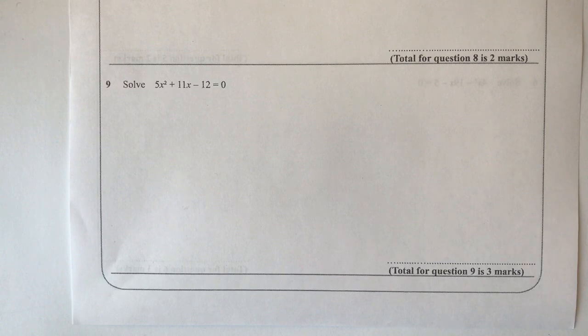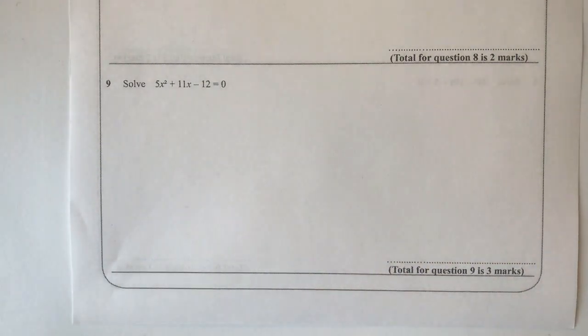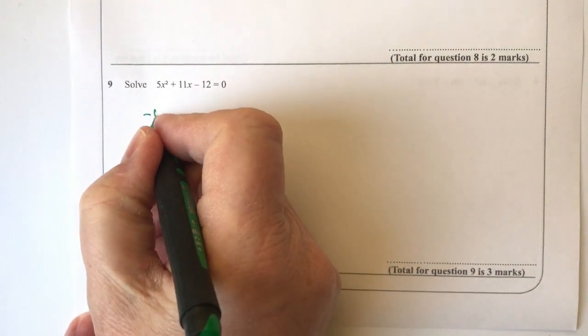So this particular one is about solving it, but nevertheless, in order to do that we need to factorize it first. The way I'm going to do that is I'm going to multiply the five by the minus twelve, and that's going to give me minus sixty.